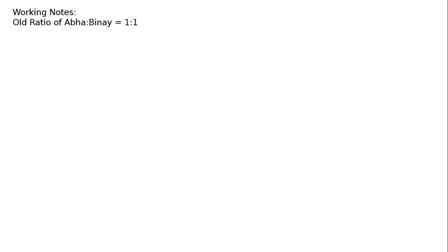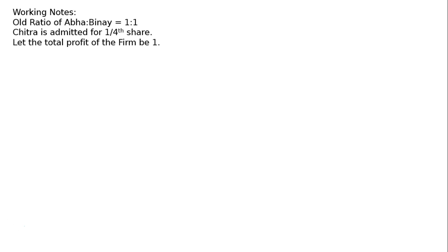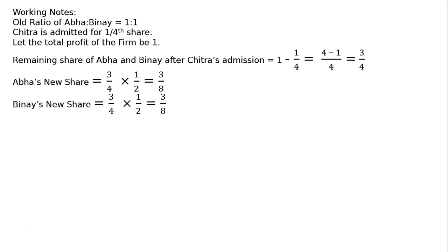Old ratio of Abha and Vinay is 1:1. Chitra is admitted for one-fourth share. Let the total profit of the firm be 1. Remaining share of Abha and Vinay after Chitra's admission: 1 minus 1/4 equals 3/4. This 3/4 will be shared among Abha and Vinay in 1:1 ratio. Abha's new share is 3/4 multiplied by 1/2, hence Abha's new share is 3/8 and Vinay's share is 3/8.